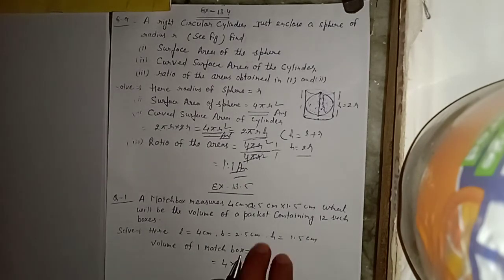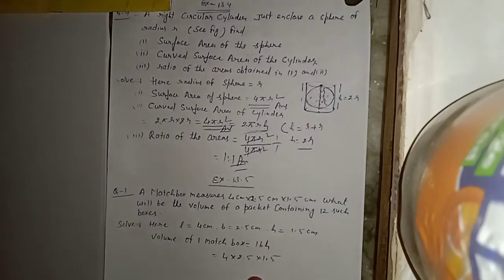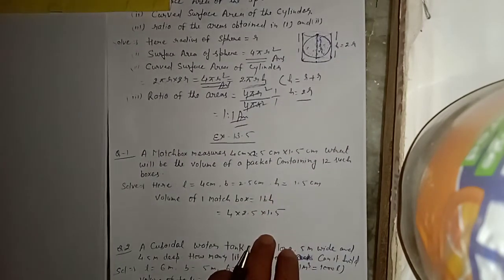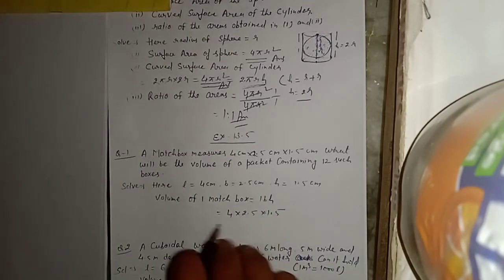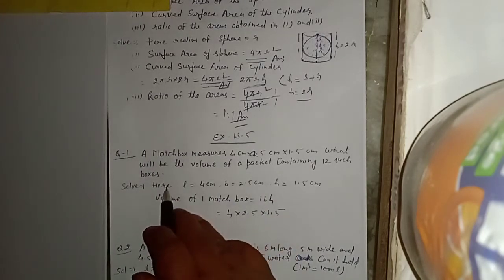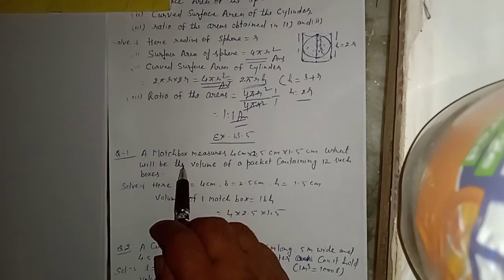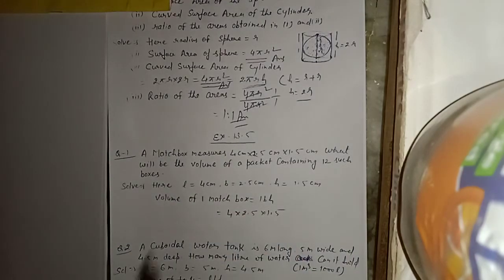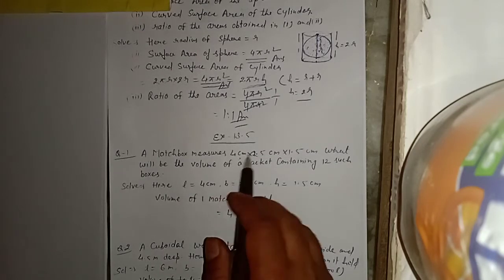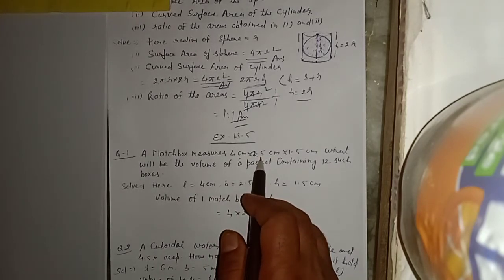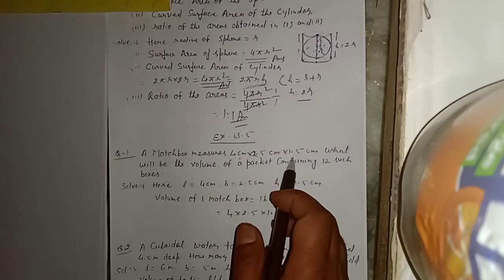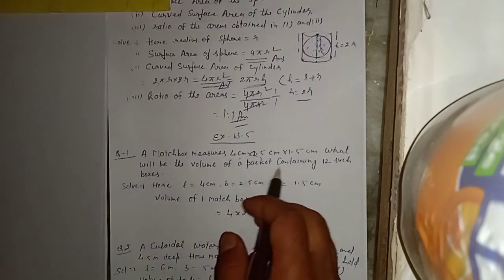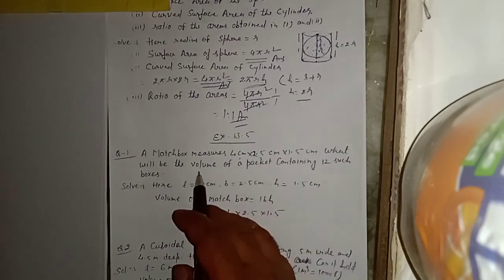अब question number 1, exercise 13.5। A matchbox measures 4 cm × 2.5 cm × 1.5 cm. What will be the volume of a packet containing 12 such boxes?